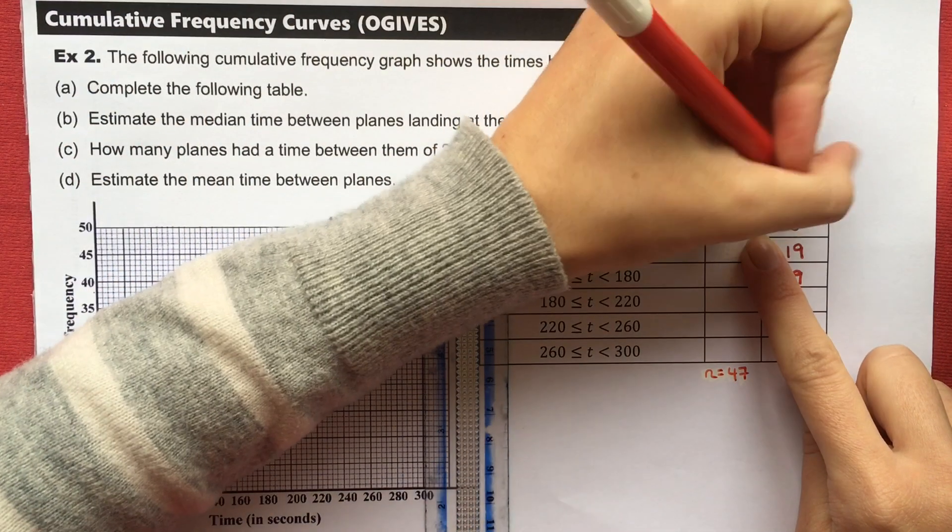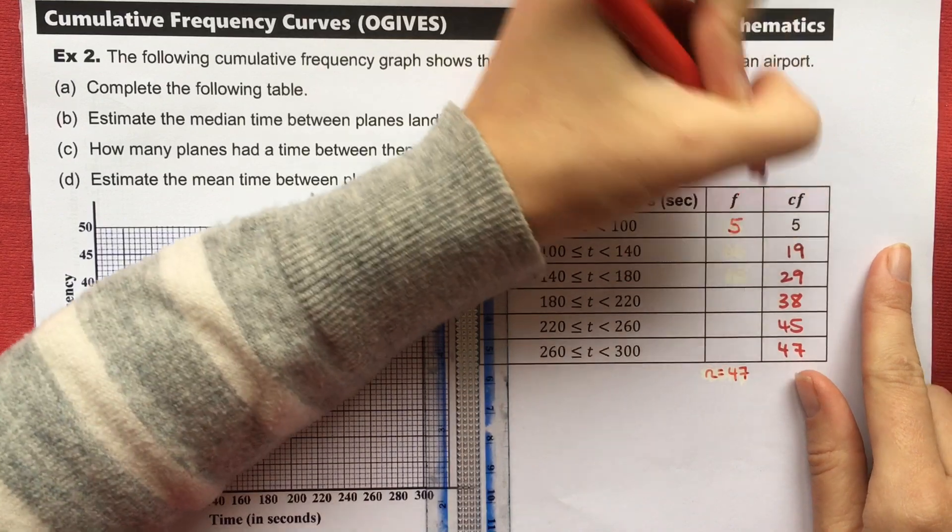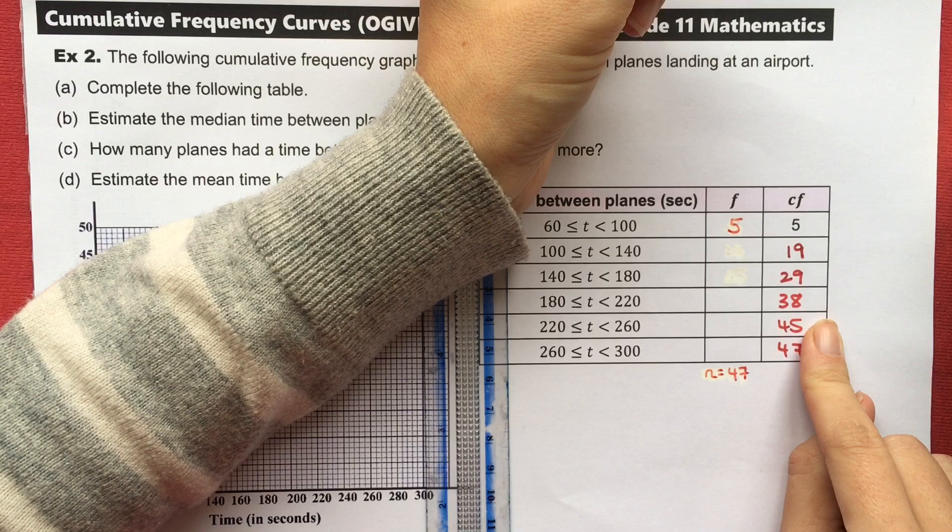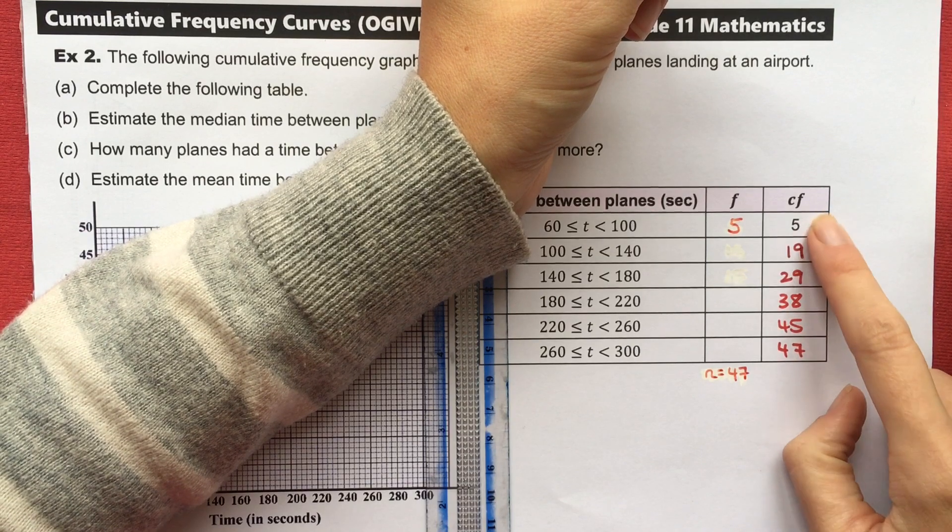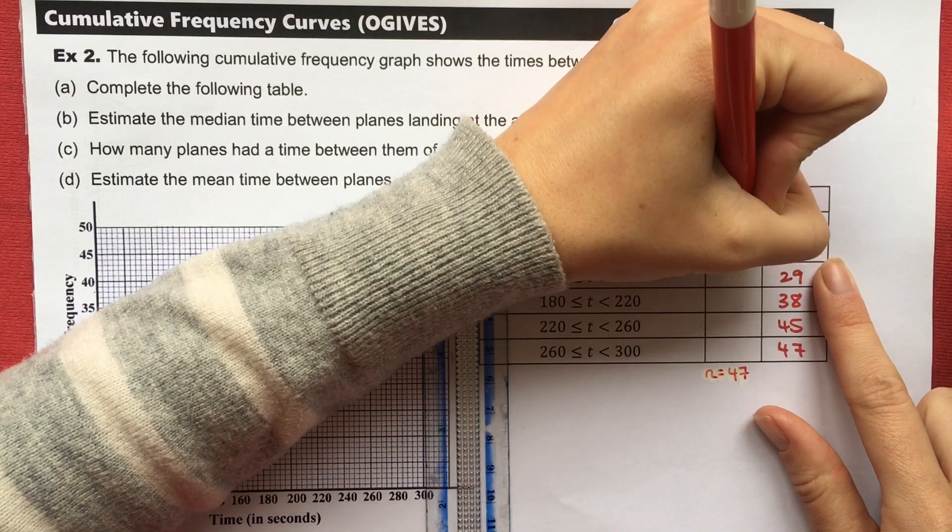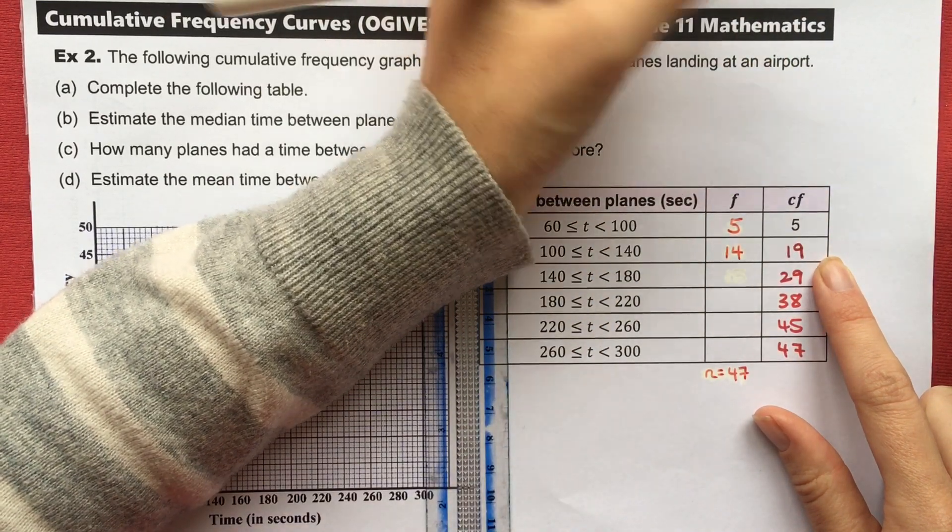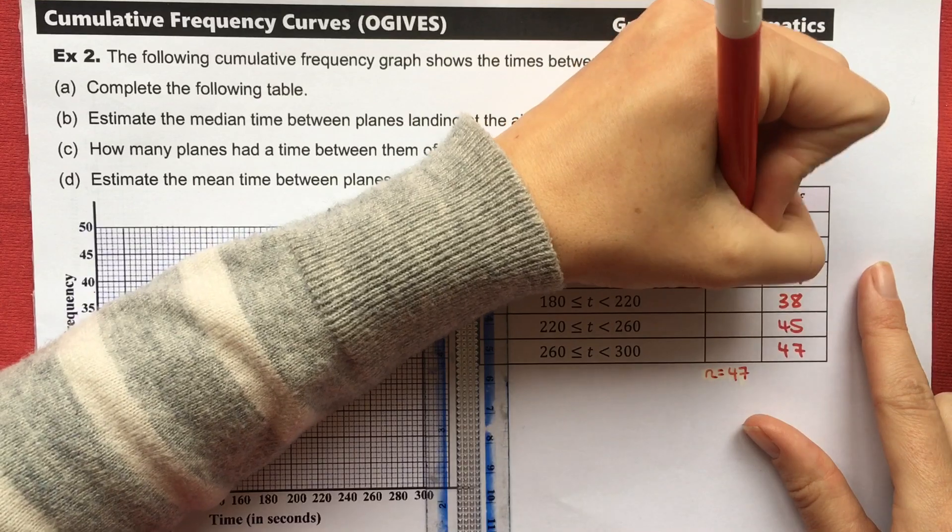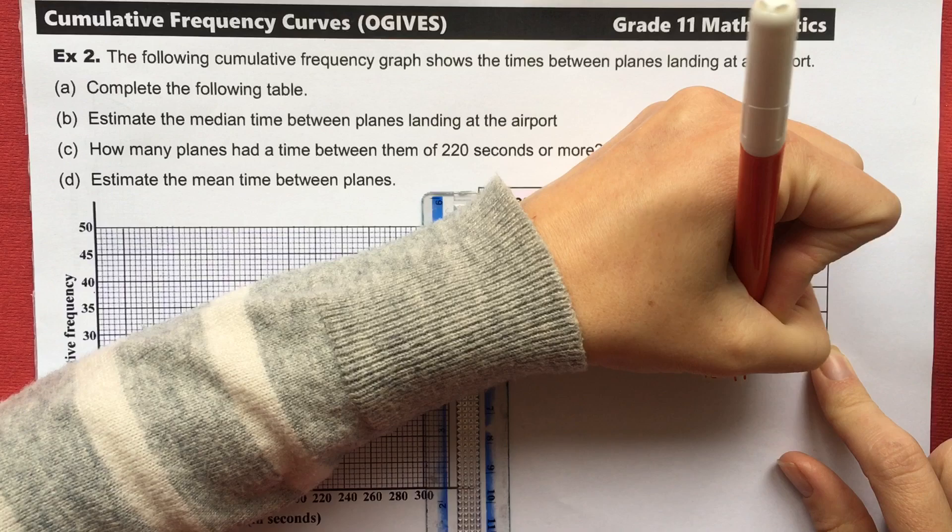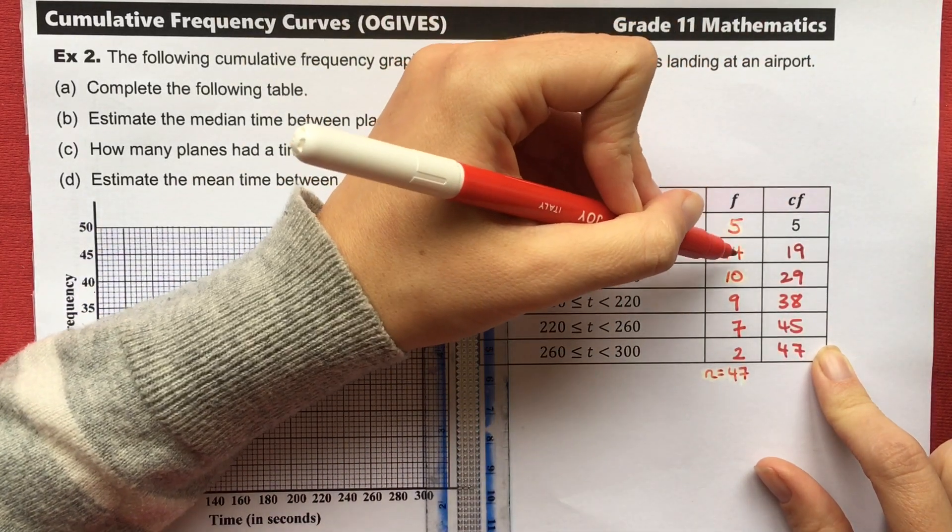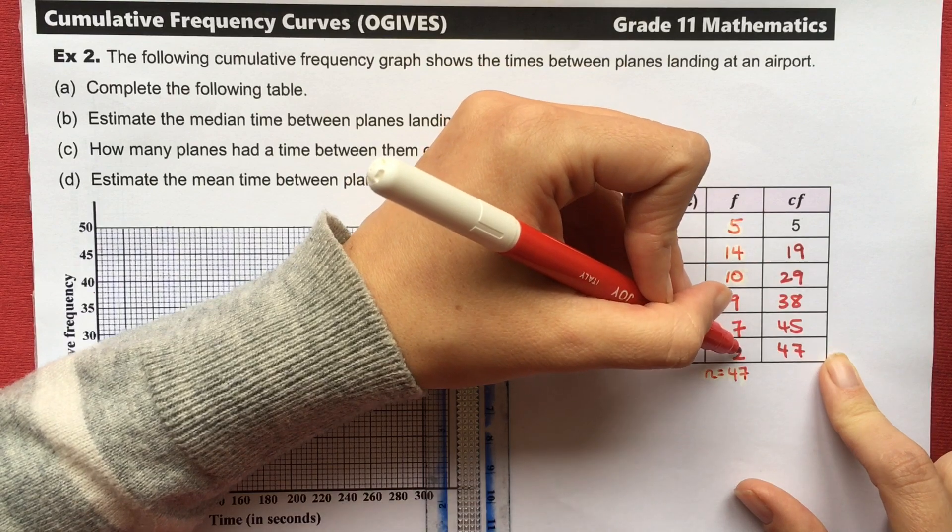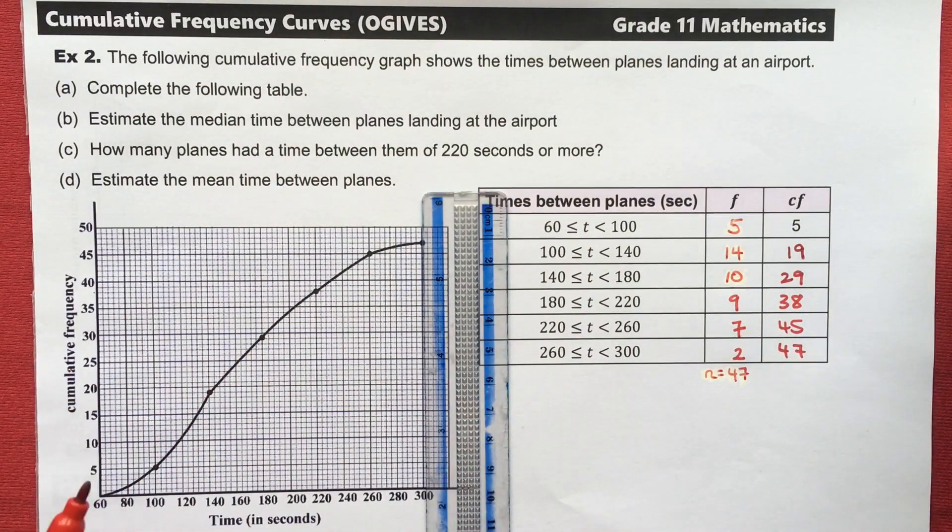Filling in this table, I don't need the graph for this. So we know that in the first interval, the frequency and the cumulative frequency are the same. In the next one, I need to figure out what did I add to 5 to get 19. I added 14. What did I add to 19 to get 29? 10. This is 9. This is 7. And 2. Let's double check. 19, 29, 38, plus 7 is 45, plus 2 is 47. So that looks right to me. So we've done letter A, completing the table.